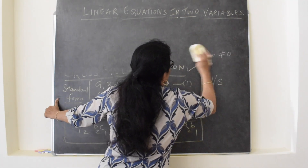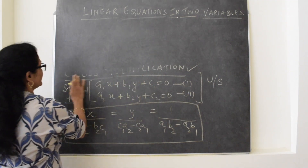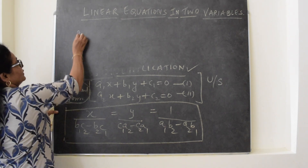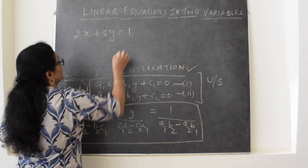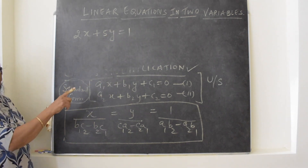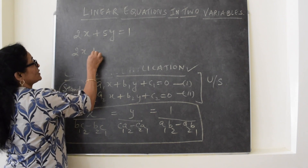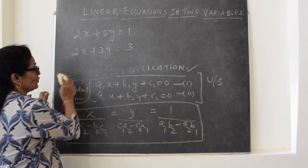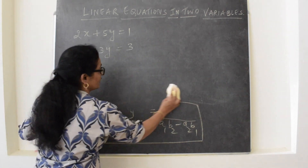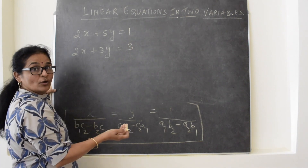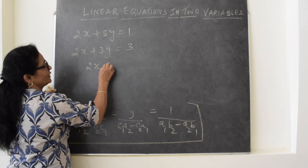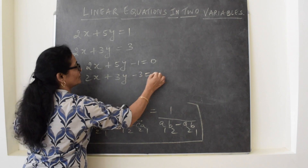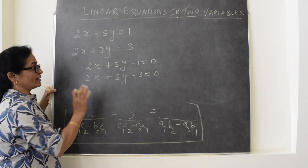To apply the cross multiplication method, the first condition is that the equations should be in standard form. Let's take one example: 2x plus 5y equals 1, and the second equation is 2x plus 3y equals 3. Make sure that c1 and c2 fall on the left-hand side, so we rewrite the equations accordingly. The first condition is now fulfilled — they are in standard form.